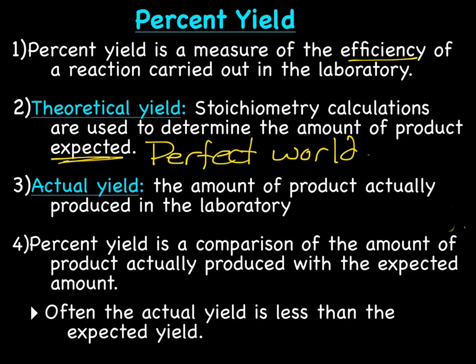And then we've got actual yield. And this is the amount of product actually produced in the laboratory. So this would be like your real world. Because in truth, the real world is not the perfect world. It's usually something does not go exactly as expected. So percent yield is a comparison of the amount of product actually produced with the expected amount.